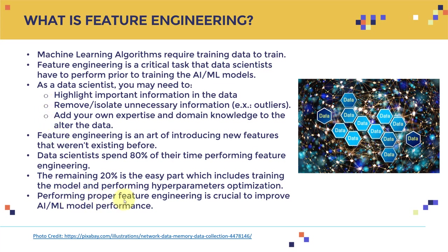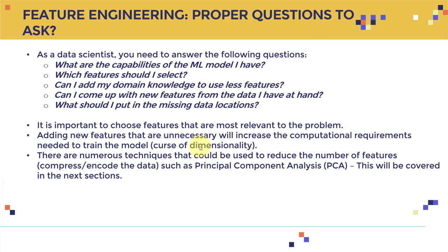Performing proper feature engineering is crucial to improve AI/ML model performance. As a data scientist, you need to answer key questions: What are the capabilities of the machine learning model I have? Which features should I select? Can I apply domain knowledge to use fewer features — for example, drop a column or create something new from existing data? Can I come up with new features from the data at hand? And what should I put in the missing data locations? You cannot feed a model with missing data — you need to fill it in first.